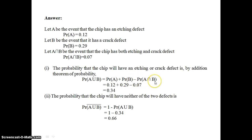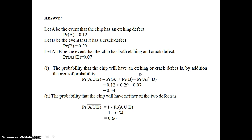From the question we have identified the probability of A, probability of B, and probability of A intersection B. Substituting these values into the formula gives 0.12 plus 0.29 minus 0.07, which equals 0.34. So the probability that the newly manufactured chip will have an etching or crack defect is 0.34.